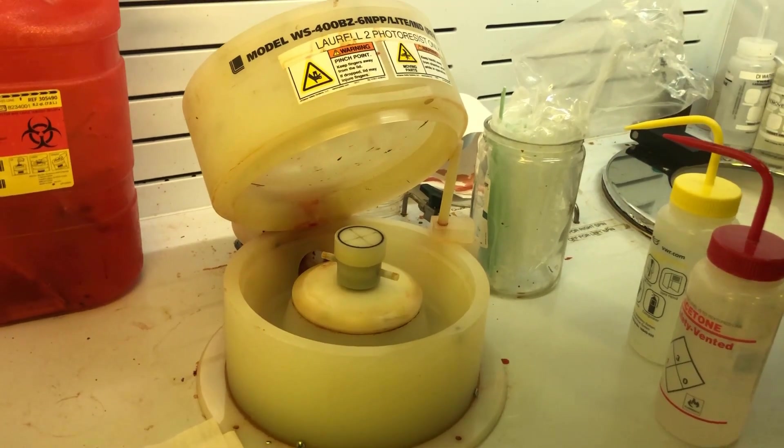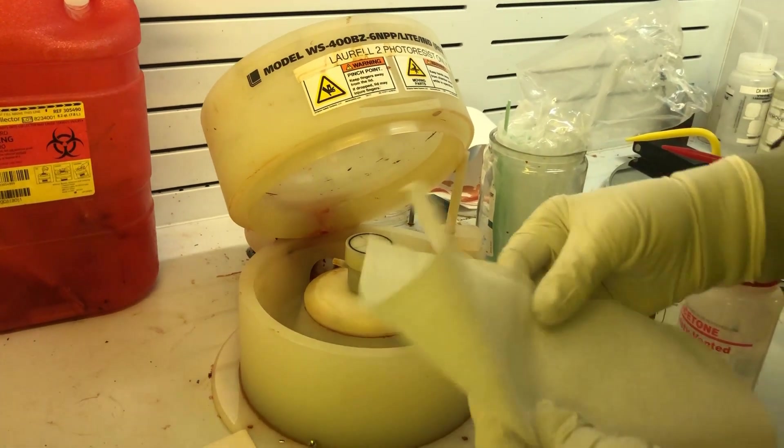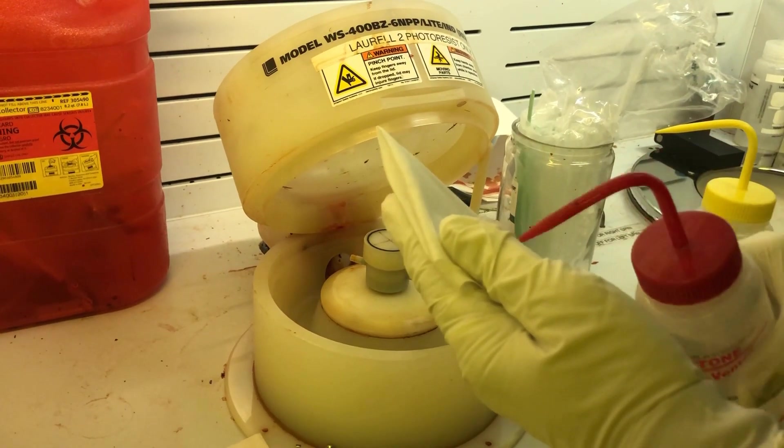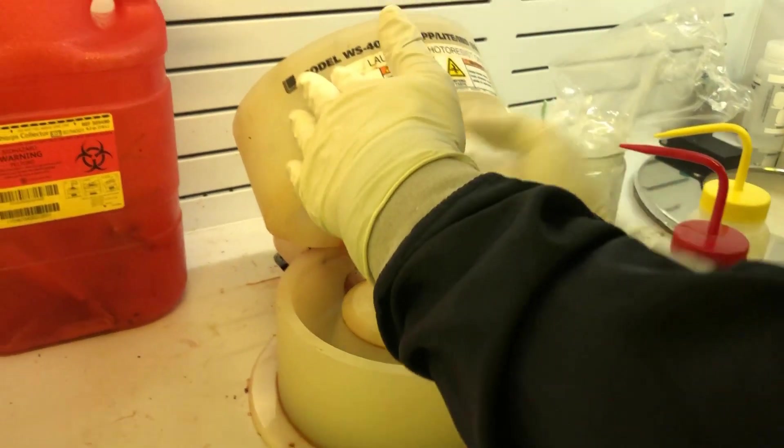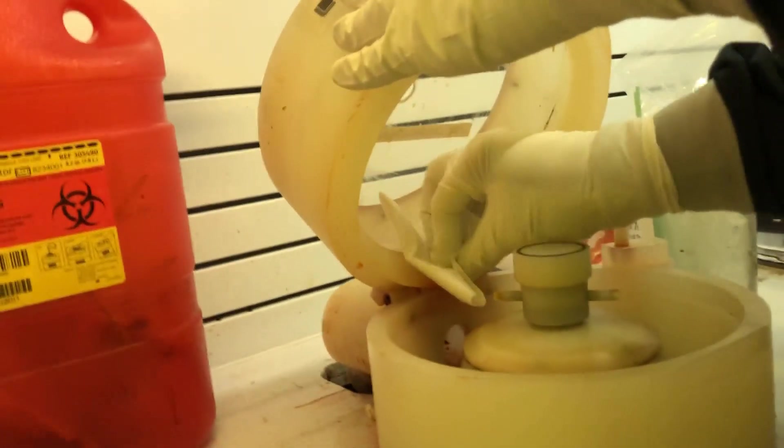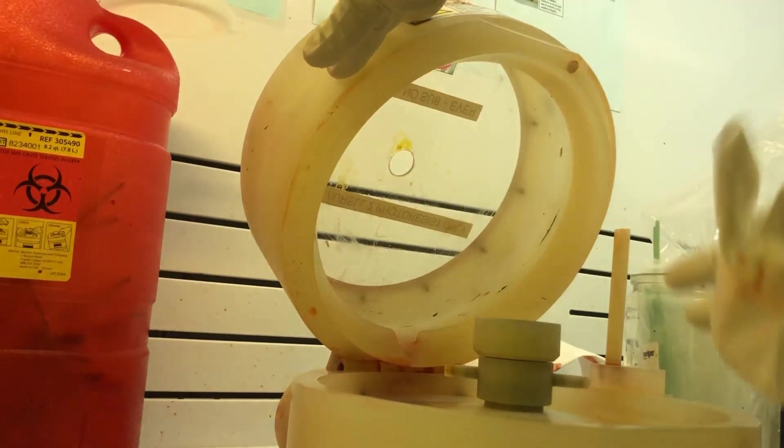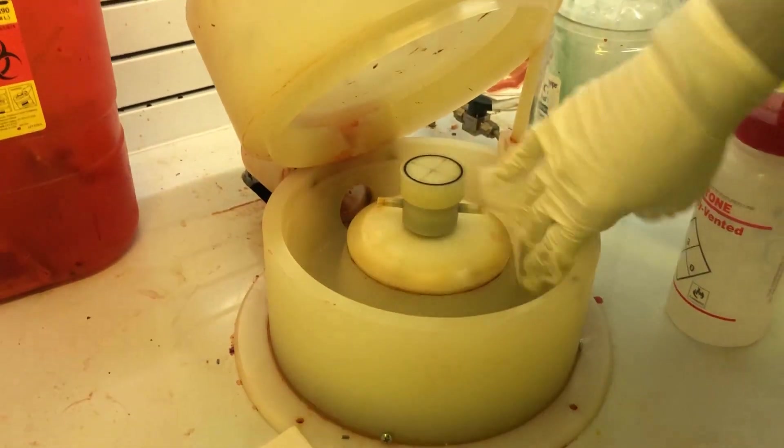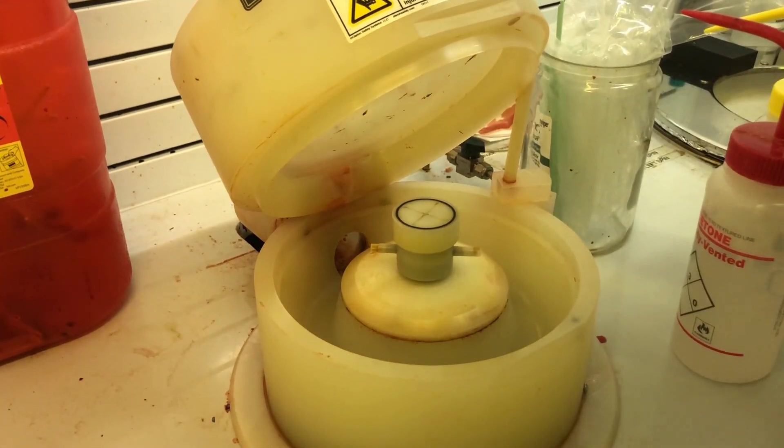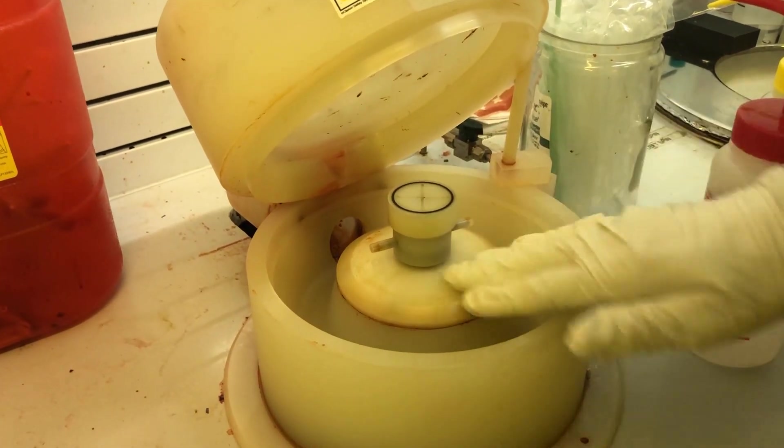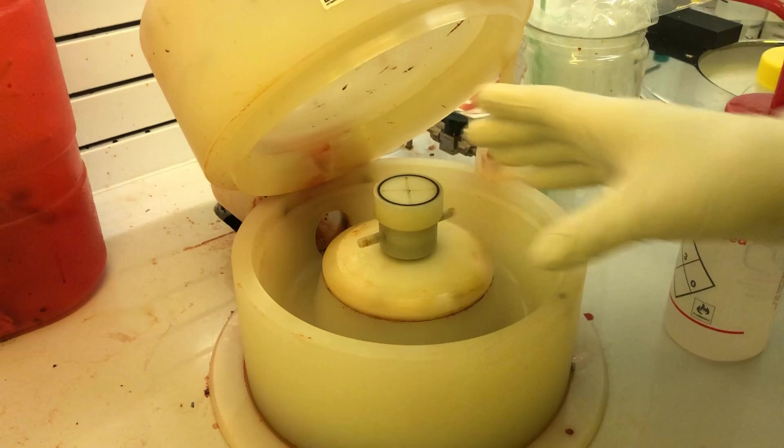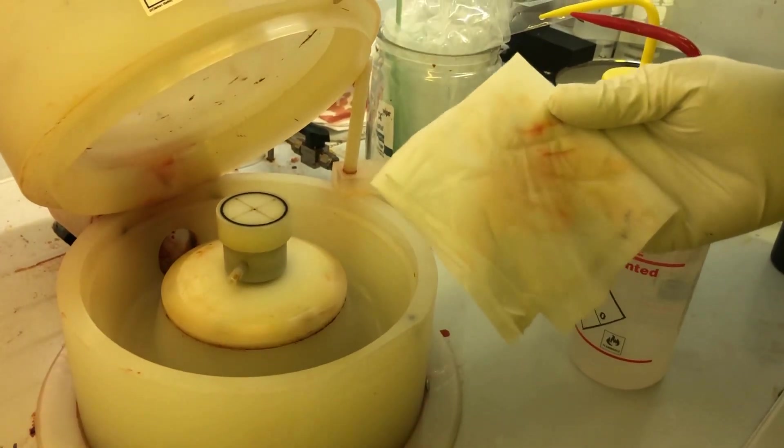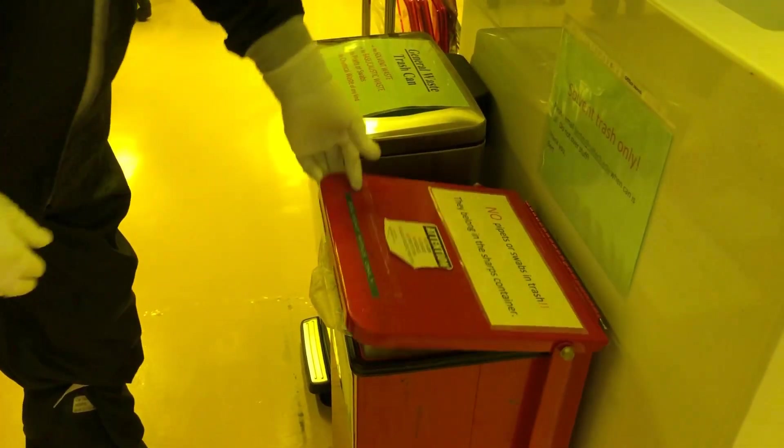Always inspect your spinner and make sure it's clean before use. I'll take a tex wipe, cleanroom wipe, and squirt some acetone and IPA. Starting with the lid, I'll wipe the lid and then the inner chamber. You never want to spray directly onto the chuck or dome of the spinner. When finished cleaning, always deposit your rag into the proper trash can, the fire-resistant trash can for solvents only.